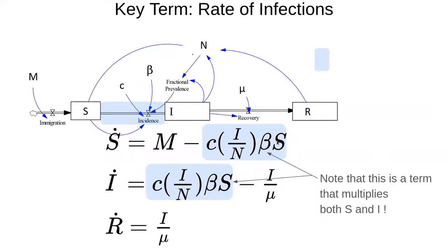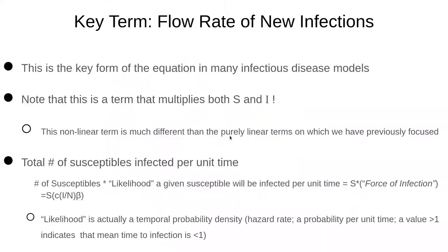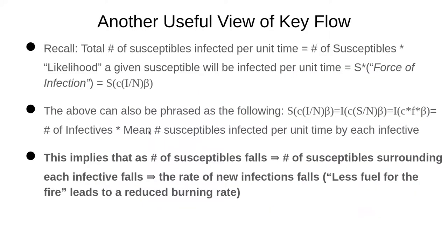There's another way of viewing this flow. We've been viewing it sort of privileging the S — thinking from the perspective of a susceptible — asking what's the chance per unit time they'll get infected. But there's another way to view this, because both I and S are here, and we could flip it around: put the S over here and the I over here. They commute — if you have A times B it's the same as B times A for real numbers. So we can flip them, and some really good insights can come from that.